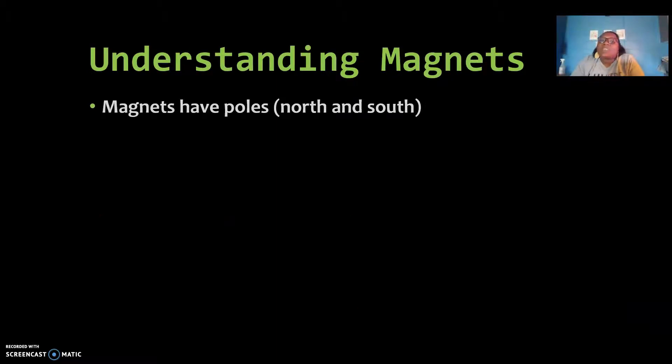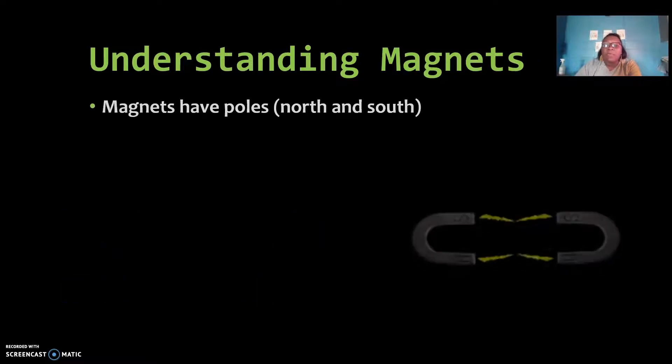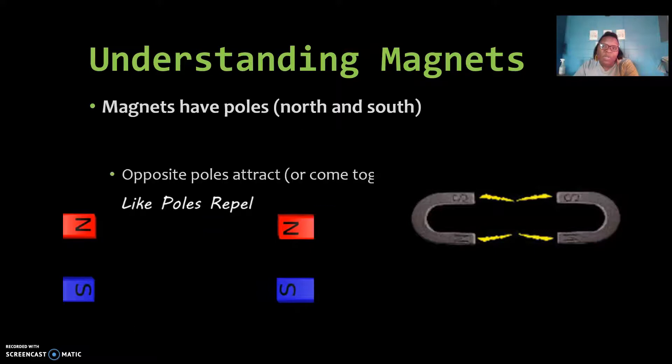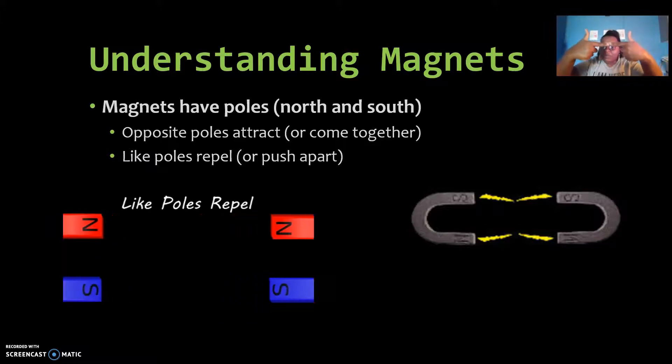So let's understand magnets. Remember, we want to be writing these notes down. It's important for us to remember from kindergarten that magnets have poles, a north pole and a south pole. It's important for us to remember that these poles either attract to one another or they repel from one another. North and south like each other. So north and south poles will attract. Opposites attract.